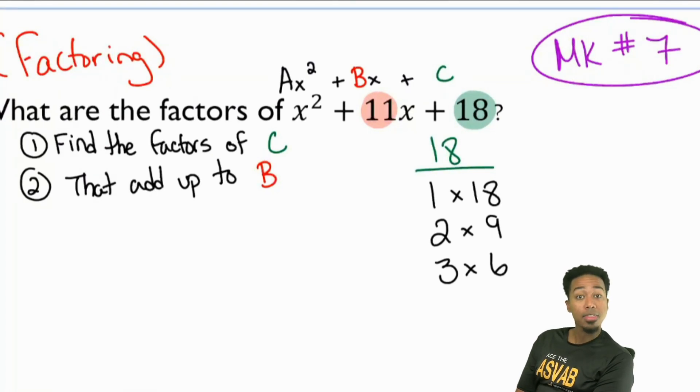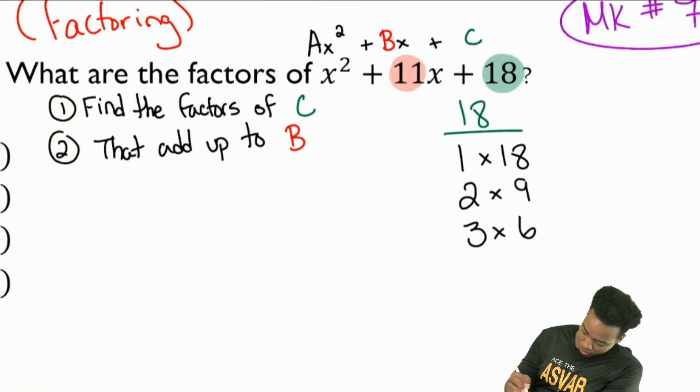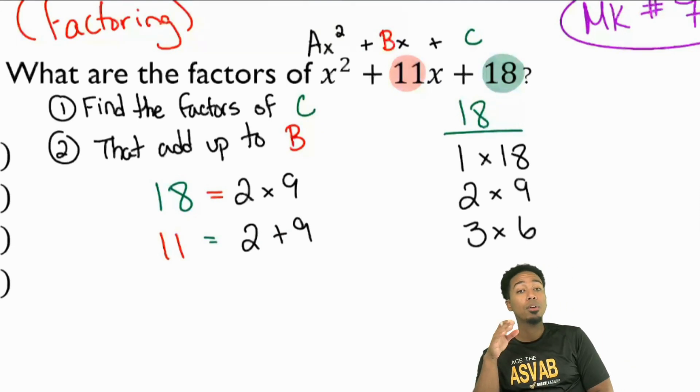Now the second question is, once you have those factors listed right here, which pair adds up to the B, which pair of these adds up to the 11? The second one, the 2 times the 9, that will add up to 11. So C, 18 equals 2 times 9, and the 11 equals 2 plus 9.